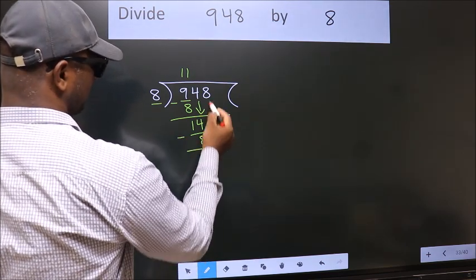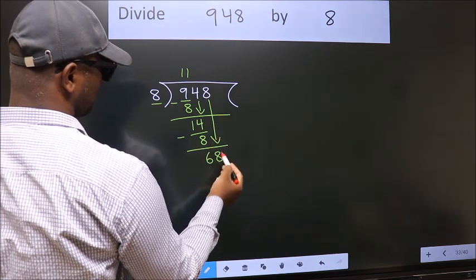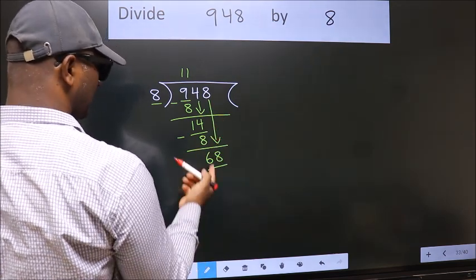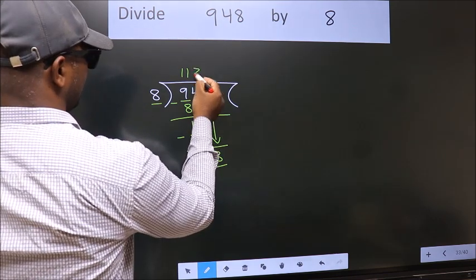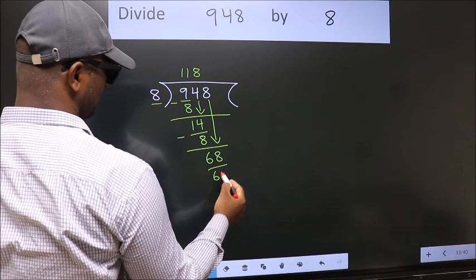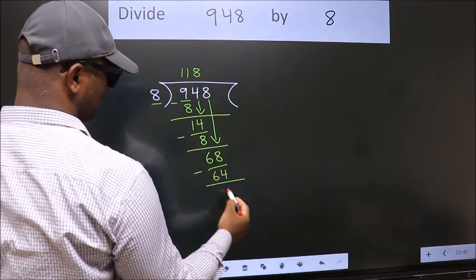After this, bring down the beside number. So, 8 down. So, 68. A number close to 68 in the 8 table is 8 8s 64. Now we subtract. We get 4.